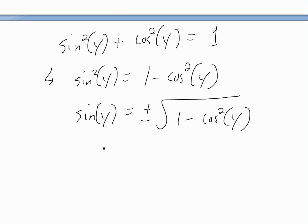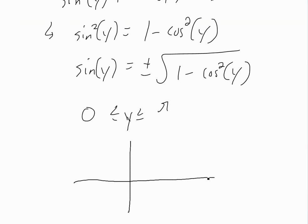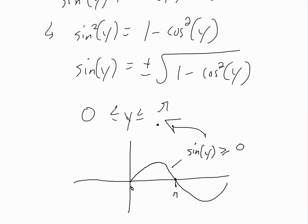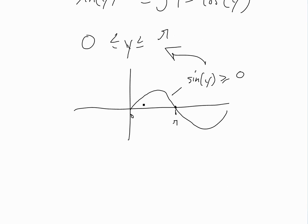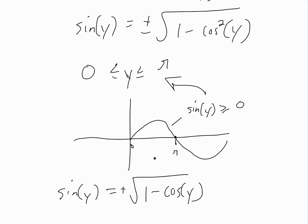But since we know that for inverse cosine y is defined between zero and pi, and sine y is positive on that interval — it's greater than or equal to zero between zero and pi — we don't need the negative sign. So with the restricted domain, sine y is simply equal to the positive square root of one minus cosine squared y.